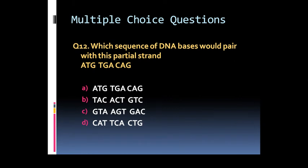Option A: P32 and C35. Option B: Phosphorus-32 and C32. Option C: Phosphorus-32 and Carbon-14. Or Option D: P32 and C12. Question 12: Which sequence of DNA bases would pair with this partial strand with sequence ATG, TGA, CAG? Options are: